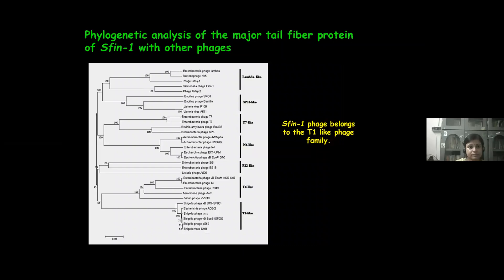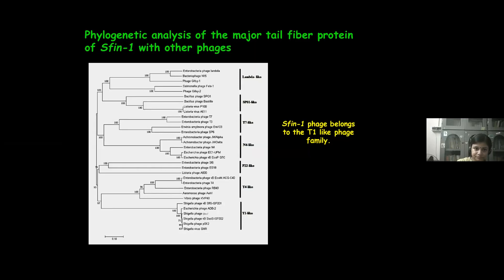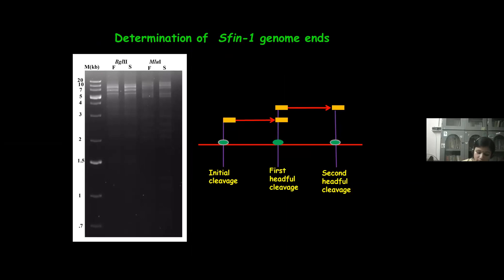Phylogenetic analysis of SF-1 was performed using the large terminase subunit protein with MEGA-7 software, and it helped find that this phage belongs to the T1-like phage family. Then we investigated the genomic end of the phage. According to the phylogenetic relationship, the phage belongs to the T1 group, so it is predicted that this phage genome is possibly circularly permutated with direct terminal repeats.